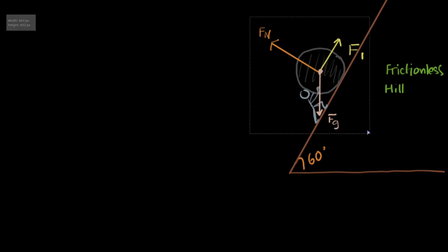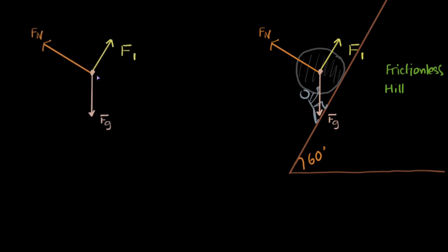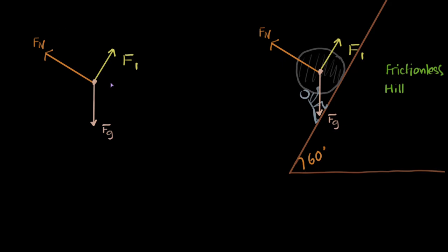Let me copy these and paste them over here so we don't make our Sisyphus diagram messy. Let us draw our coordinate system like this — dotted lines — and now let me tell you about how to convert these vectors into their horizontal and vertical parts.